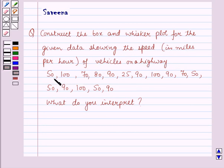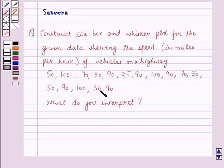The speeds given are: 50, 100, 70, 80, 90, 25, 90, 70, 50, 50, 90, 100, 50, and 90 miles per hour. Then, from the box and whisker plot, what do you interpret?